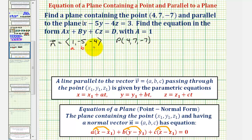b = -5, c = -4, x₁ = 4, y₁ = 7, and z₁ = -7. So we'd have a, which is positive 1,